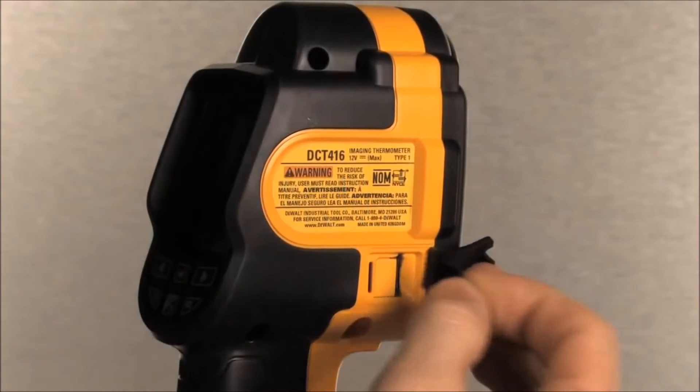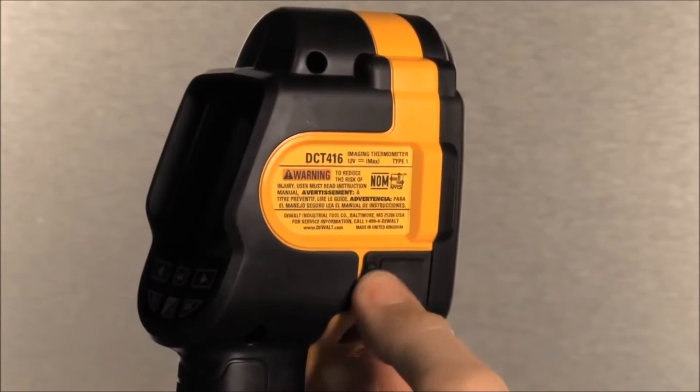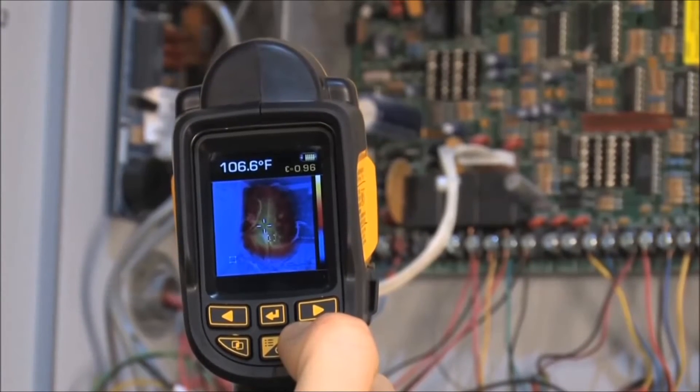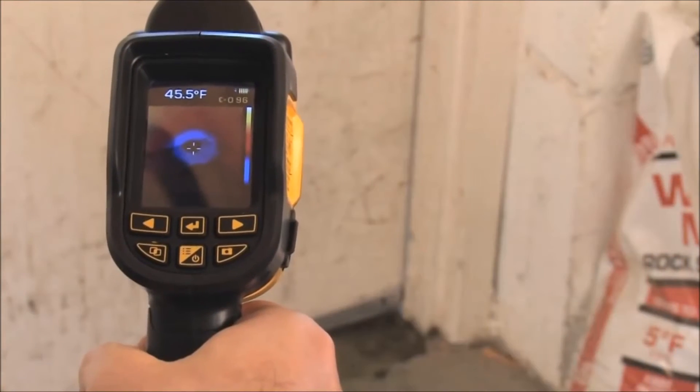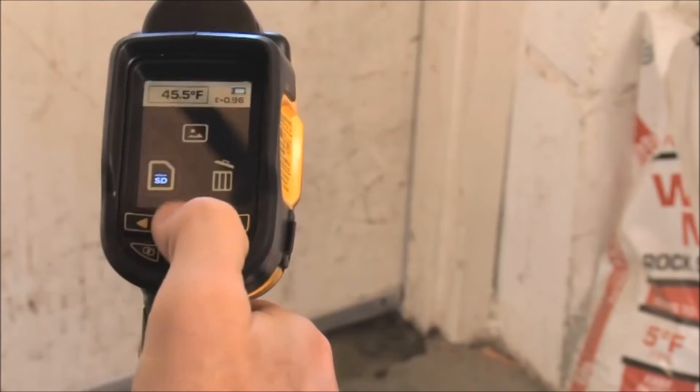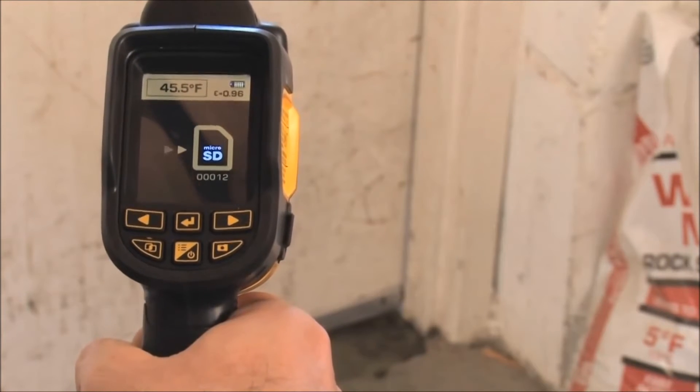Next, let's install a micro SD card into the imaging thermometer as shown. Push the photo capture button located on the right of the bottom row. The DCT416 will pause for three seconds so you can review the photo. You can then save the photo to the micro SD card or delete it.